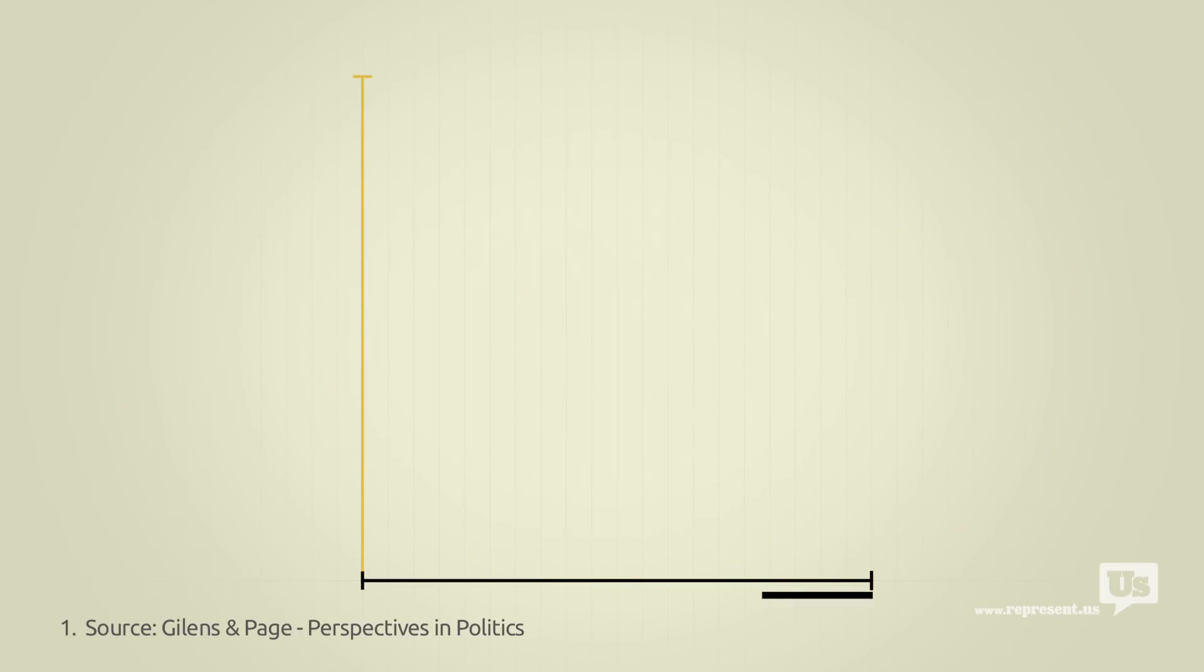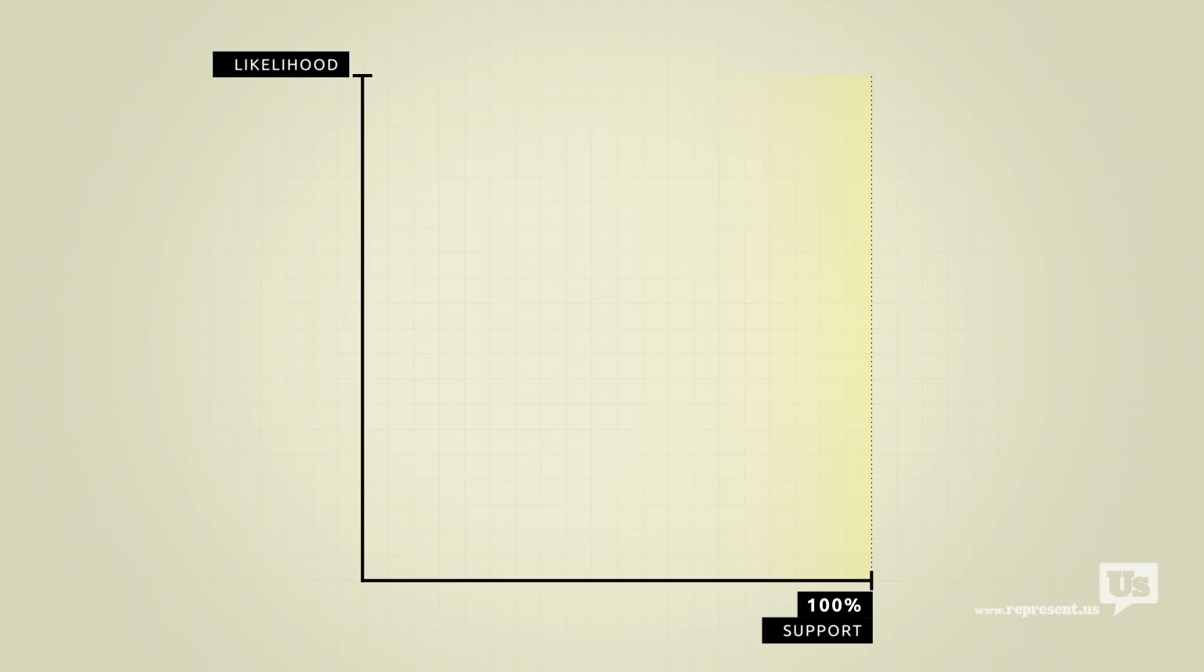This axis here represents public support for any given idea. On the left at 0% are ideas that not a single American wants. On the right at 100% are ideas that everyone supports. This axis represents the likelihood of Congress passing a law that reflects any of these ideas, from a 0 to a 100% chance.